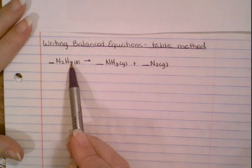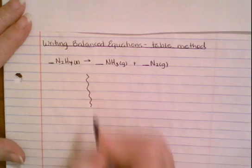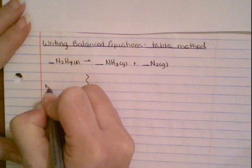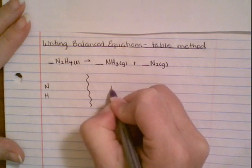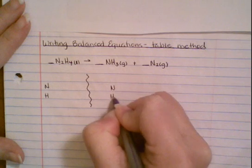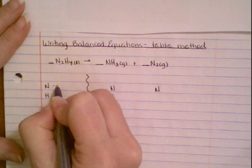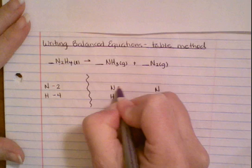When you do a table, you want to draw a little jagged line where the arrow is. You want to list out your elements that you have on both sides for each part of the equation. Now on the left I have two nitrogens and four hydrogens, and in this first one I have one nitrogen and three hydrogens and two nitrogens.